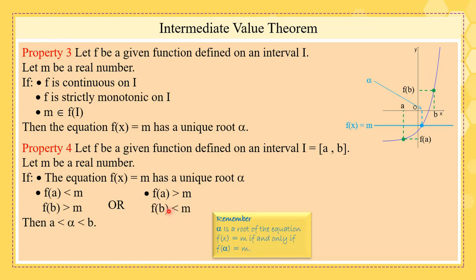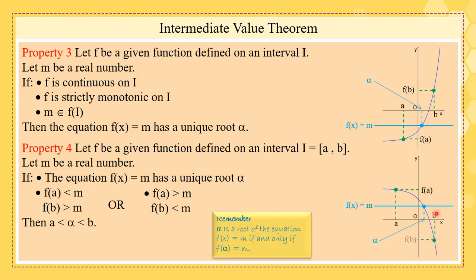Another case: if f(a) > m or f(b) < m, we get the same result. This corresponds to a strictly decreasing function. The line y = m cuts the curve at one point alpha. Here f(a) is above m and f(b) is below m, yet alpha is still between a and b.